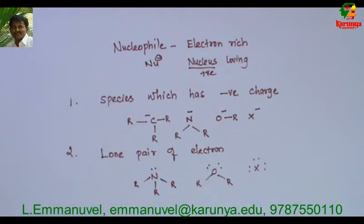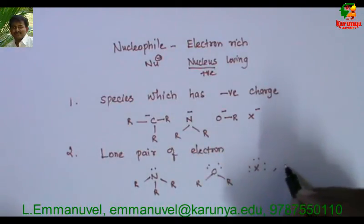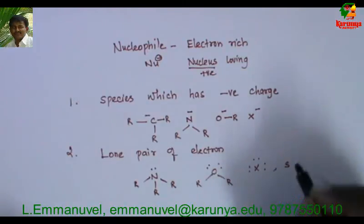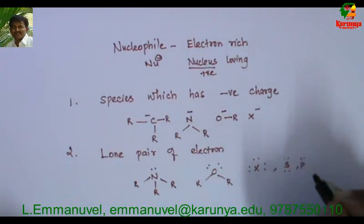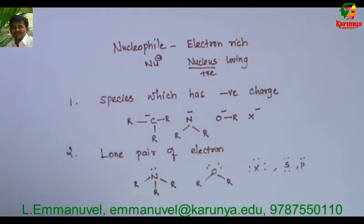The atom which has a lone pair of electrons — carbon doesn't have a lone pair, so we look at nitrogen, oxygen, and halogen. In addition to that, if you go to the next period you can find sulfur and phosphorus, and so on. But the most common ones are nitrogen, oxygen, and halogen.